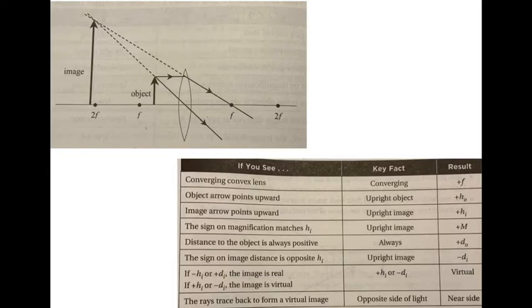An example of this is the magnifying lens. An object placed between the focal point and the magnifying lens will be upright, virtual, and magnified.